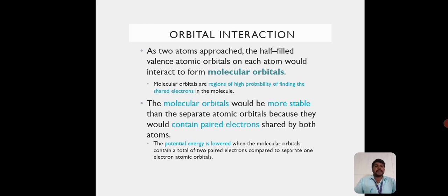Orbital Interaction. As two atoms approach, the half-filled valence atomic orbitals on each atom would interact to form molecular orbitals. Molecular orbitals have regions of high probability of finding the shared electrons in the molecule. The molecular orbitals would be more stable than the separate atomic orbitals because they would contain paired electrons shared by both atoms.